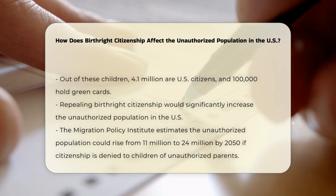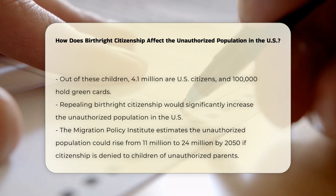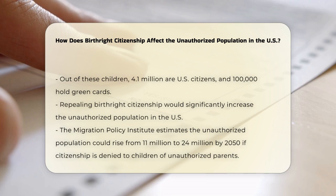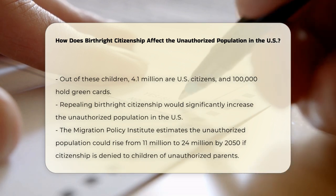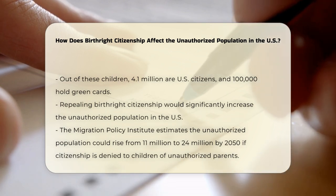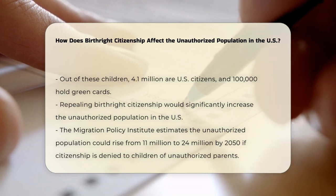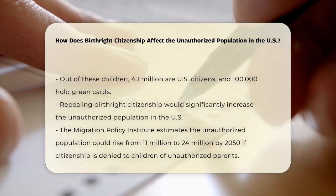If birthright citizenship were repealed, the consequences would be far-reaching. The unauthorized population in the U.S. would significantly increase. According to the Migration Policy Institute, denying citizenship to children with at least one unauthorized parent would balloon the unauthorized population from 11 million today to 24 million by 2050.